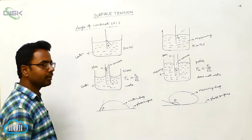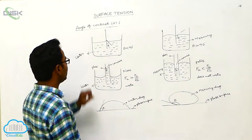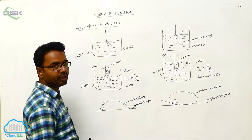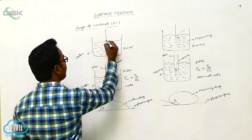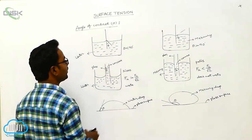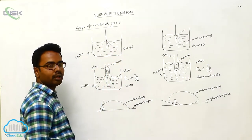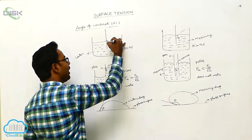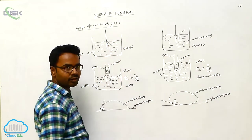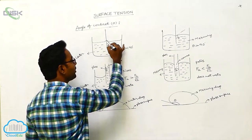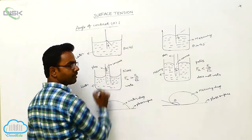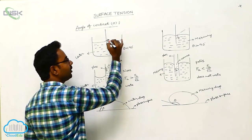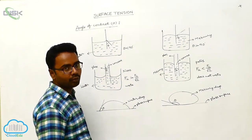What is angle of contact? Suppose this is a liquid — water. In this liquid, we place a glass plate vertically. This is the point of contact between the water and the glass plate. At this point of contact, we draw a tangent to the liquid surface. This tangent is making some angle inside the liquid with the glass surface. This angle is called the angle of contact.